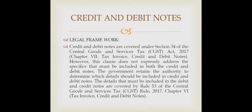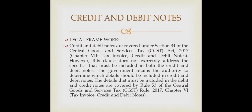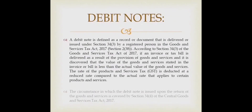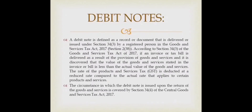Credit and debit notes are covered under Section 34 of the Central Goods and Service Tax Act 2017. However, this clause does not explicitly address the specifics that must be included in both the credit and debit notes. The government retains the authority to determine which details should be included. Rule 53 of the Act plays a very important role. A debit note is defined as a document issued under Section 34 subclause 3 by a registered person. If the value of goods and services stated in the invoice is less than the actual value, or if the tax rate is reduced, a debit note is issued.